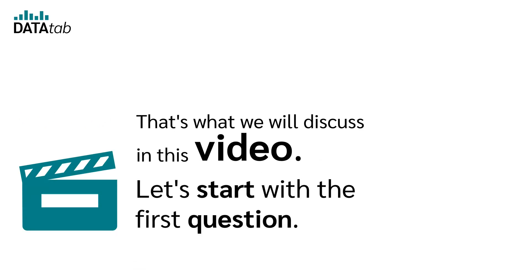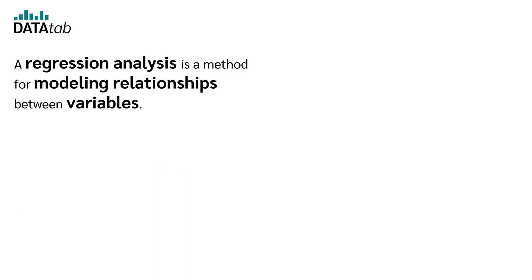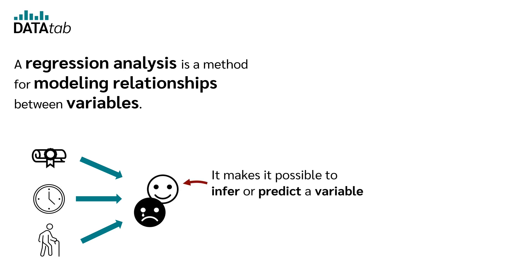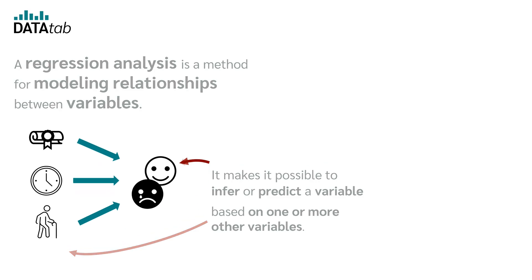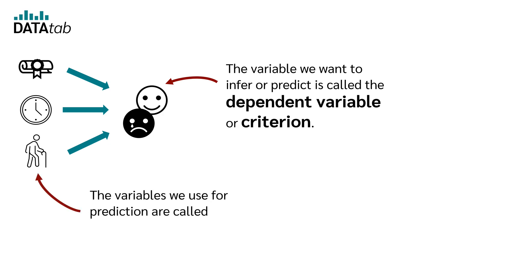Let's start with the first question. What is a regression? A regression analysis is a method for modeling relationships between variables. It makes it possible to infer or predict a variable based on one or more other variables. The variable we want to infer or predict is called the dependent variable or criterion. The variables we use for prediction are called independent variables or predictors.